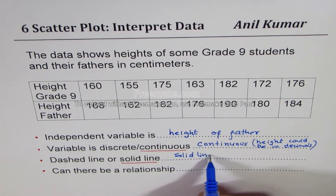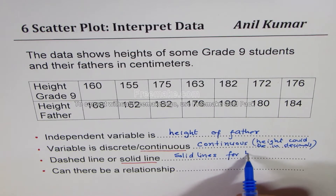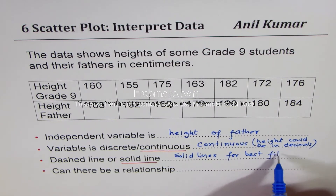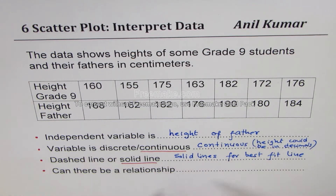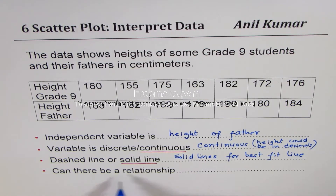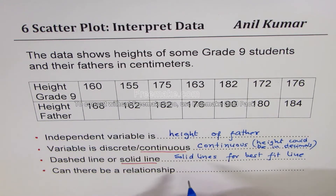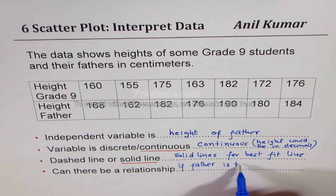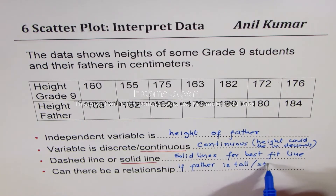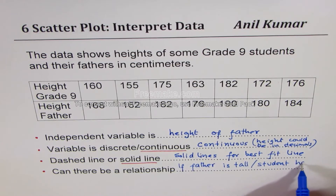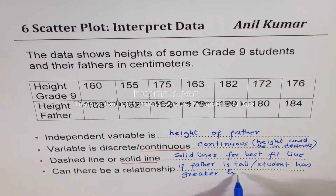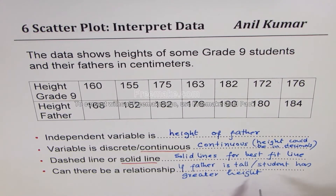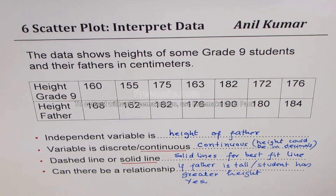We should use solid lines for the best fit line whenever the data is continuous. Now, can there be a relationship? We see that if the father is tall, the student has greater height. So we do see a trend — the answer is yes. We see that students tend to inherit height from their father.